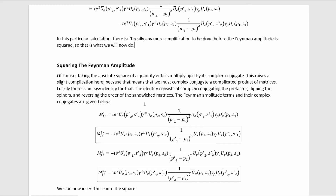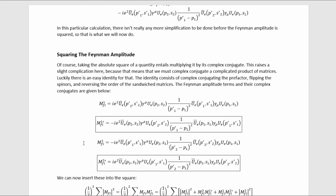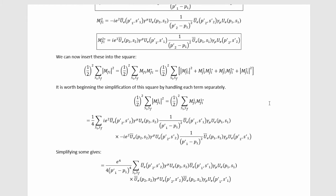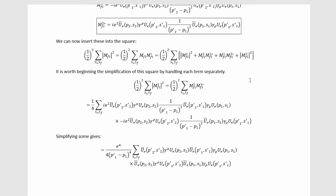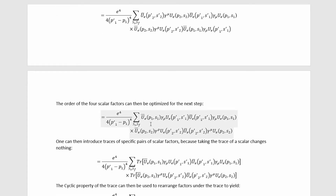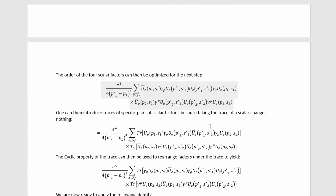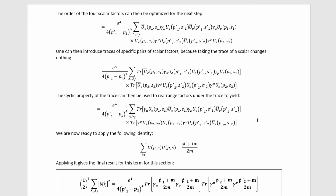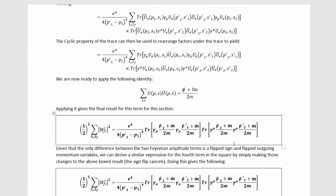However, there is an identity for taking the complex conjugate that makes our job easy: complex conjugate the prefactor, flip the spinors, and reverse the order of the sandwiched matrices. The Feynman amplitude terms and their complex conjugates are given, showing how that identity works. We can then write out the square by plugging the terms into the squared amplitude formula. It's worth simplifying the four terms separately. Handling the first term — plugging in the relevant Feynman amplitude and its conjugate — we simplify by bringing factors out, reorder scalar factors, insert traces over scalars, and apply the cyclic property of the trace to use a gamma matrix identity.